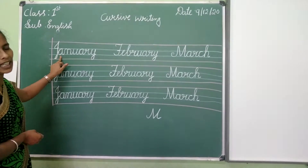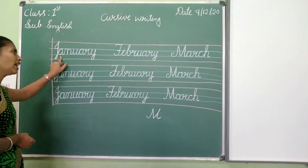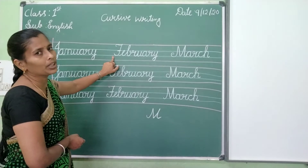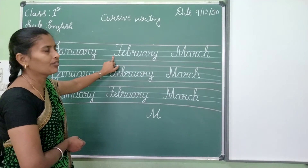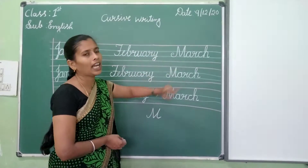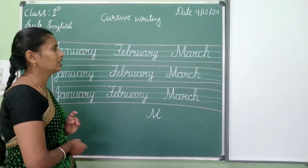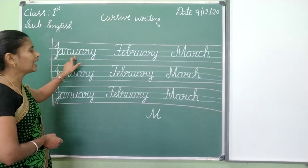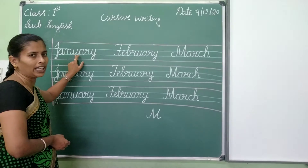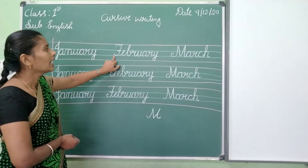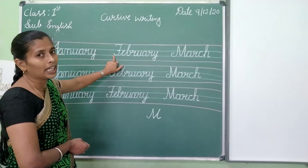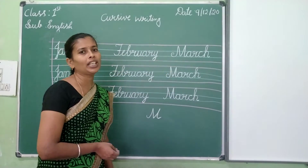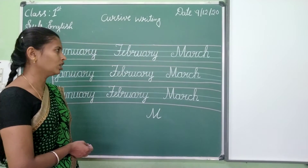January: J, A, N, U, A, R, Y. February: F, E, B, R, U, A, R, Y. March: M, A, R, C, H. March. Okay? Try once again. January: J, A, N, U, A, R, Y. February: F, E, B, R, U, A, R, Y. March: M, A, R, C, H. March. Okay?